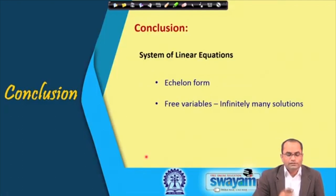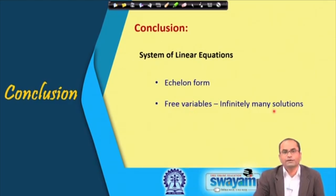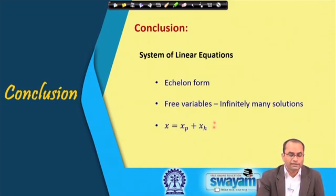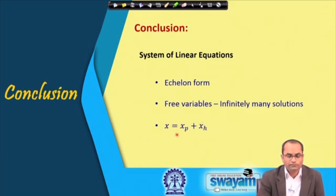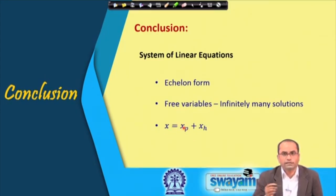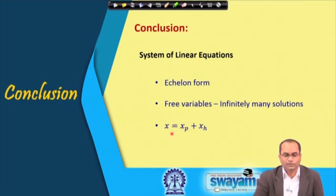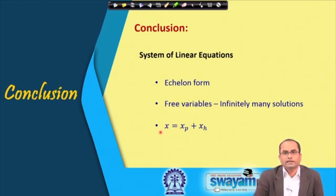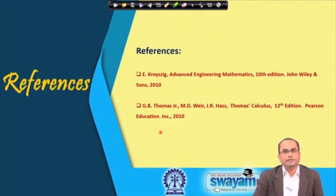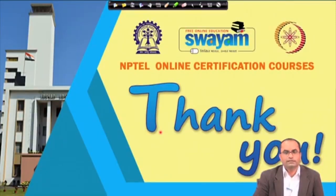In conclusion: for the system of equations, the echelon form is very important. We introduced the concept of the free variable, which leads to infinitely many solutions. The solution of a non-homogeneous system has the special structure x = xp + xh, where xp satisfies A x = b and xh satisfies A x = 0, and together they also satisfy A x = b. Thank you.